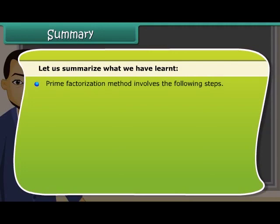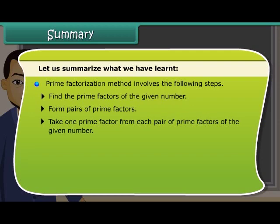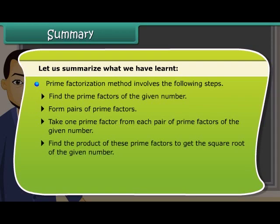Prime factorization method involves the following steps: find the prime factors of the given number, form pairs of prime factors, take one prime factor from each pair of prime factors of the given number, find the product of these prime factors to get the square root of the given number.